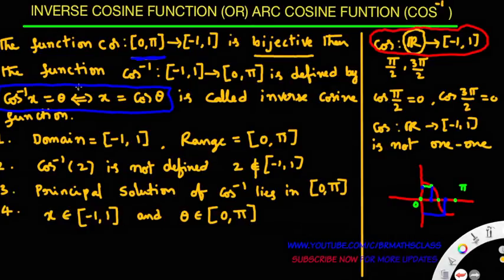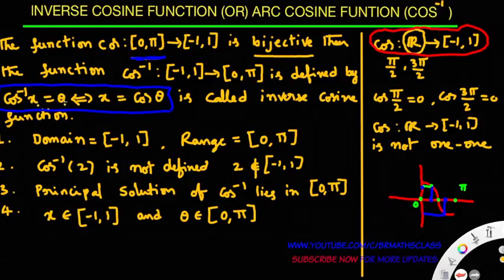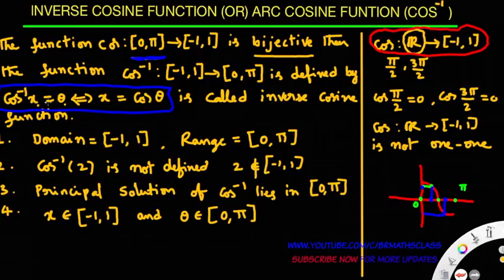Observe the definition: cos inverse x equals to θ if and only if x equals to cos θ. There are two quantities here — x and θ. In this definition, x always lies in the closed interval [-1, 1]. As seen in the second point, cos inverse of 2 is not defined because 2 is not in this interval. And θ always belongs to closed interval [0, π], which is the range of this function.